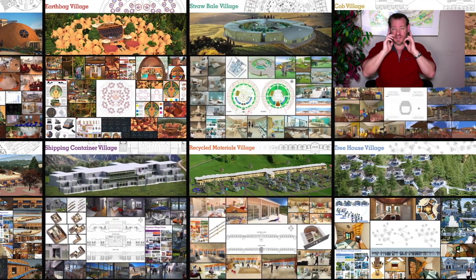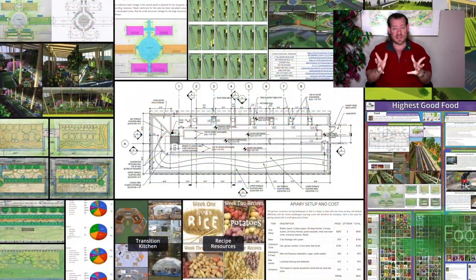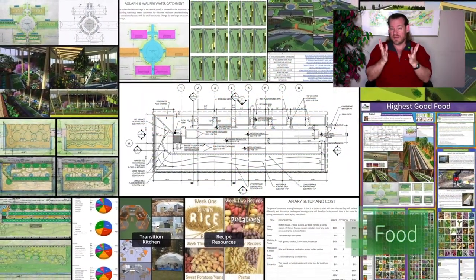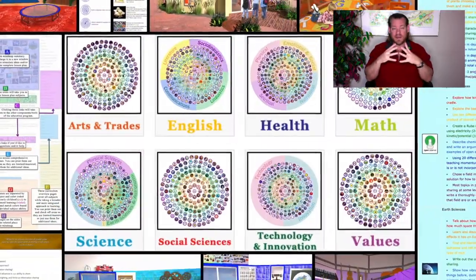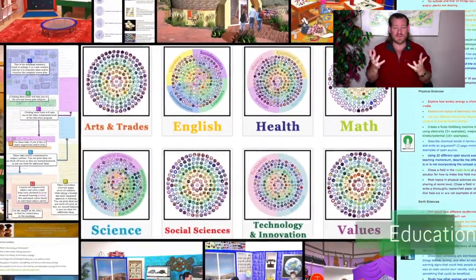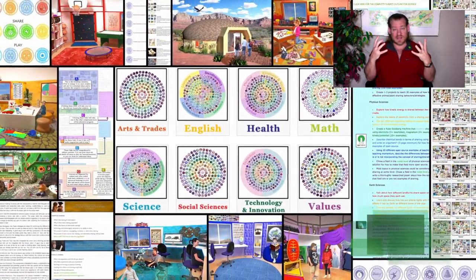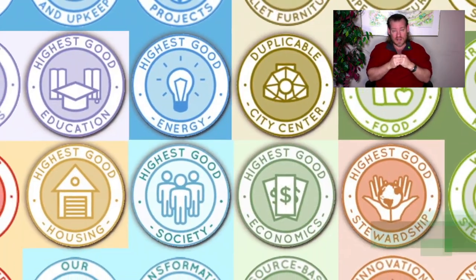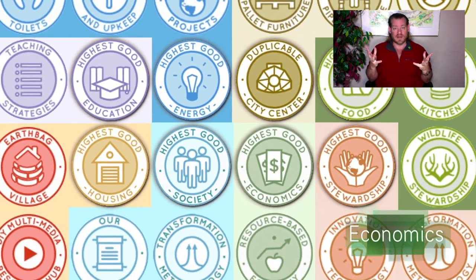Today's topic is Community Ecology. Ecology is the relationship between living things and their physical environment. Community Ecology is the ecology of a community in relationship to its physical environment.